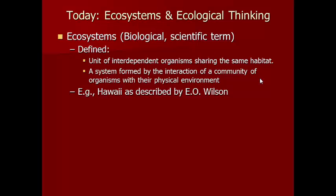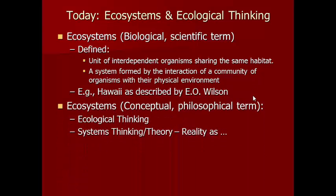The example we're going to focus on is the one used by EO Wilson, which is Hawaii. Hawaii works well because it's isolated to some extent, so it's a little easier to define where the boundaries of that ecosystem are. Then I'll use the term ecosystems more loosely to help us conceptualize systems thinking or systems theory, and give you some specific principles about what that entails.